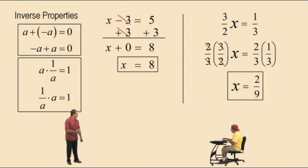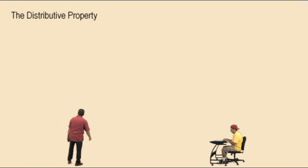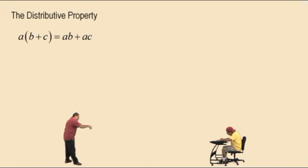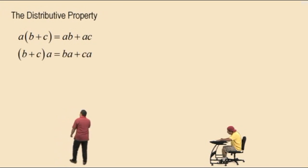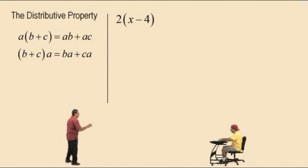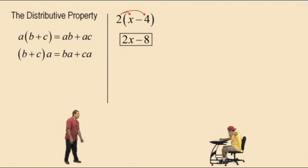Now the distributive property — a very important property generally used to remove parentheses. A times the quantity B plus C equals A times B plus A times C. Example: 2 times the quantity x subtract 4. Order of operations says do parentheses first, but we can't combine x subtract 4 — they're not like terms. So we distribute the 2: 2 times x is 2x, bring down the subtraction, and 2 times 4 is 8. Answer: 2x subtract 8. Those are not like terms, so we can't combine them.